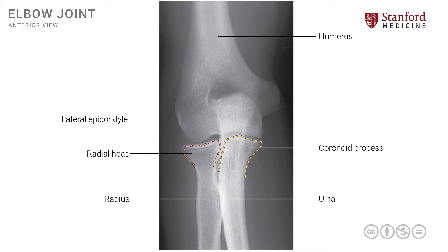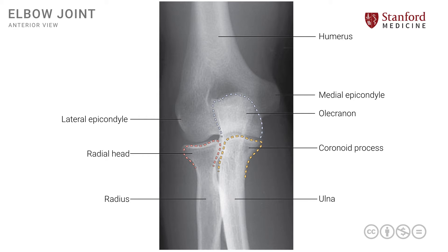The lateral epicondyle and the medial epicondyle are also seen on the distal end of the humerus. The olecranon is seen here, which is an interesting structure on the posterior side. We can see it on the AP x-ray because the radiation passes through and it overlaps with the condylar area of the humerus. The olecranon fossa is the area on the distal humerus that accommodates the olecranon, which will be seen more clearly in a lateral view.